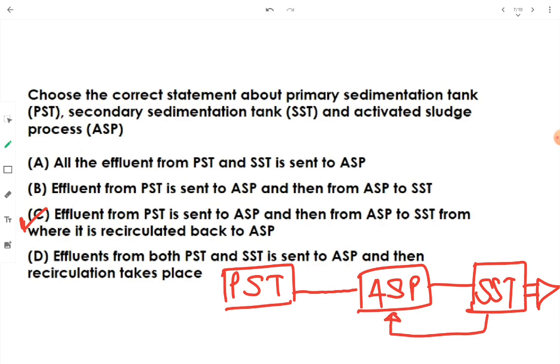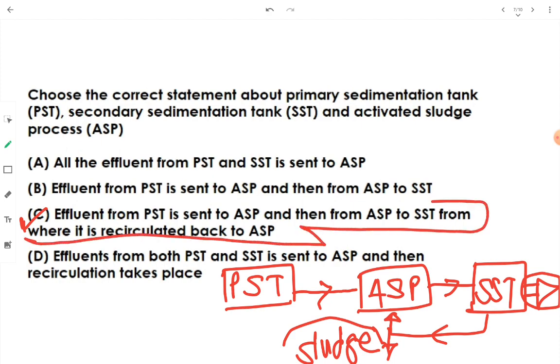Wastewater will be sent for the next treatment and some amount gets recirculated to ASP. For the recirculation, for the recycle of the vestige. And from ASP, we get rid of sludge. Sludge is then removed from ASP. The flow is from PST to ASP, from ASP to SST, some part will be recirculated. Sludge will be get rid from ASP. And we will be removing wastewater continuously from SST. Option C depicts the correct scenario of the flow chart that takes place in between PST, ASP and SST.